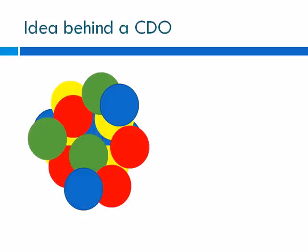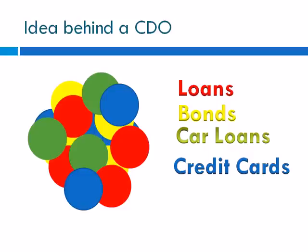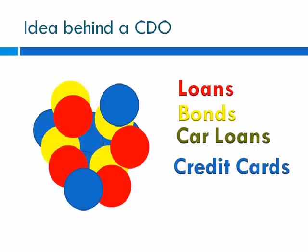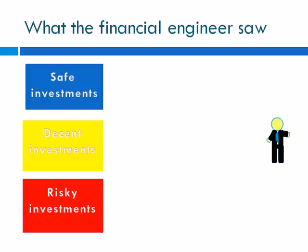CDOs were a conglomeration of different types of debt. Here is a representation: each ball is a different type of debt — red balls are loans, yellow balls are bonds, green balls are car loans, and blue balls are credit cards. If there is a problem in the car loan market and that fails, the rest of the CDO is still intact. Another important aspect of the CDO was that, like CMOs, they were mixed with a variety of risk. A financial engineer assumed that mixing safe, decent, and risky investments in the right proportion could yield a relatively stable financial product.